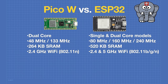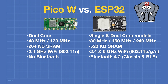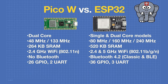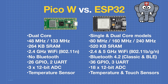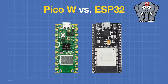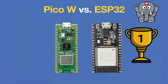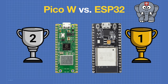Both units are capable of 2.4 GHz Wi-Fi, with some ESP32s also capable of 5 GHz. The Pico-W has no Bluetooth while the ESP32 does. The Pico-W has 26 GPIO pins and 2 UARTs vs. the ESP32's 36 GPIOs and 3 UARTs. The Pico-W has 3 12-bit analog-to-digital converters vs. 18 on the ESP32. The Pico-W has a built-in temperature sensor; the ESP32 also has that plus touch sensors. It would seem the ESP32 is in first place and the Pico-W in second.